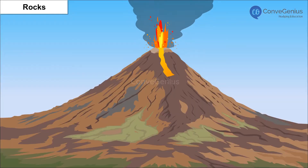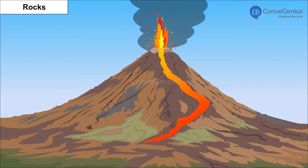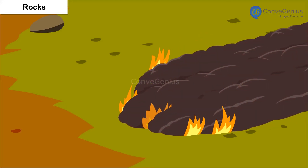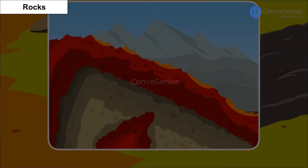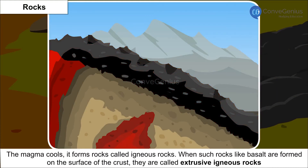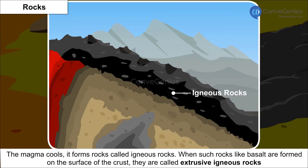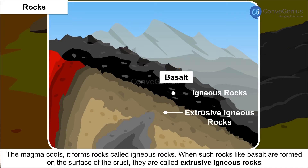When a volcano erupts, the molten lava flows out and pours onto the earth's surface in the form of molten magma. When the magma cools, it forms rocks called igneous rocks. When such rocks like basalt are formed on the surface of the crust, they are called extrusive igneous rocks.